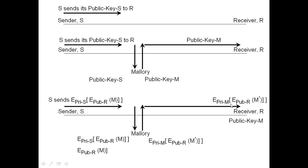So the receiver thinks the message came from S and is using the keys for S, but that is not really right. This shows there is no authentication that the message came from the original sender. Also, the receiver actually receives M prime while it was supposed to receive M, so there is no integrity. The receiver thinks the message came from the sender but it is actually using the keys of Malorie — that is why there is no authentication. Similarly, the receiver gets M prime instead of M, so there is no integrity.